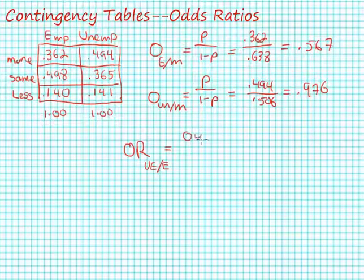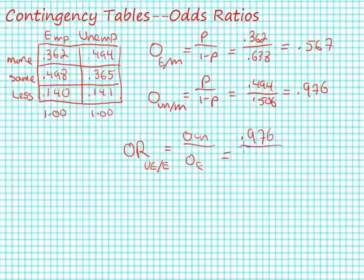If we take the ratio of two odds—in this case, our odds for unemployed over the odds for employed—we get 0.976 divided by 0.567, and we end up with an odds ratio of 1.72.